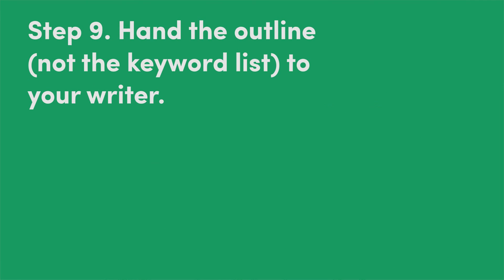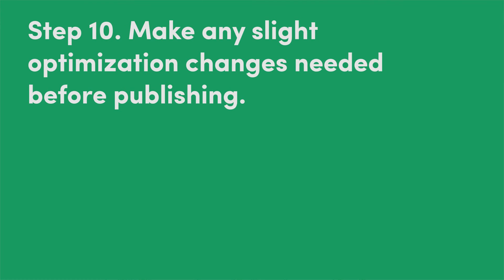This brings us to step nine, which is to literally hand the outline — not the keyword list, don't even let them see it — hand the outline to your editor. You're going to get much better content back and they're going to be writing for the user and not for keywords. Step ten: make slight optimization changes before you publish. Tweak it a little bit, make sure it's nailing everything that you want, but do it at that stage and you're going to have much better content.